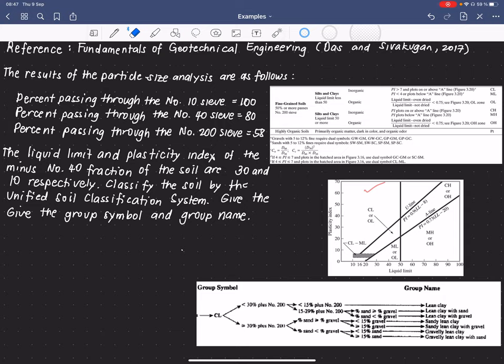The results of the particle size analysis are as follows. The percent passing through the number 10 sieve is 100, percent passing the number 40 sieve is 80, percent passing through the number 200 sieve is 58. We are also given a liquid limit and plasticity index of the minus number 40 fraction of the soil, which are 30 and 10 respectively.